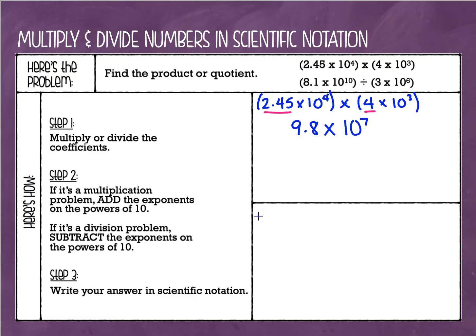All right, let's look at our next example. Our next example is 8.1 times 10 to the tenth power, and this time we're going to be dividing it by 3 times 10 to the sixth power. All right, this is a division problem. So our first step is we're going to divide our coefficients. If I do 8.1 divided by 3, that's going to give me 2.7. Scientific notation is always times 10, but when we have a division problem, we are going to subtract our exponents, and 10 minus 6 is 4. So the answer is 2.7 times 10 to the fourth power.